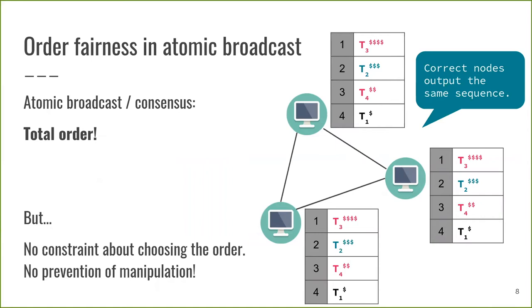Traditional atomic broadcast protocols guarantee a total order, which means that all correct parties obtain the same sequence of messages and that any message submitted to the network by a client is delivered in a reasonable lapse of time. However, this property does not constrain which order is chosen before producing the output sequence and doesn't prevent malicious parties from manipulating the order or inserting their own transactions. So how can we obtain this and how would we define a fair order?